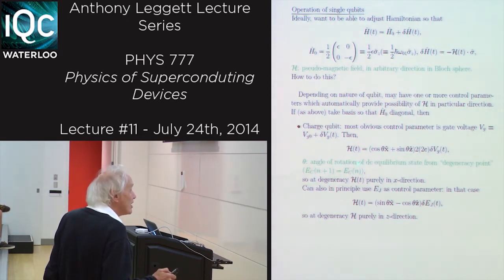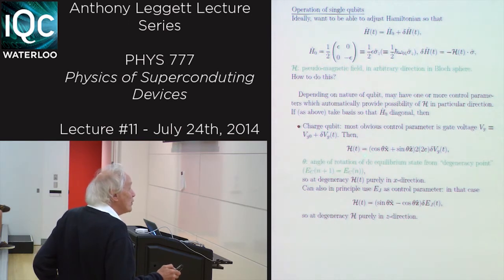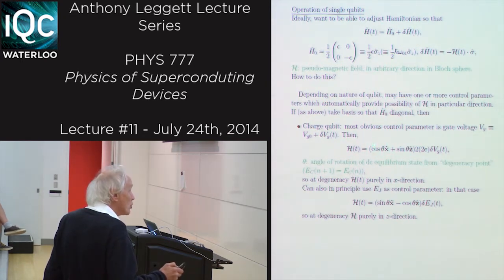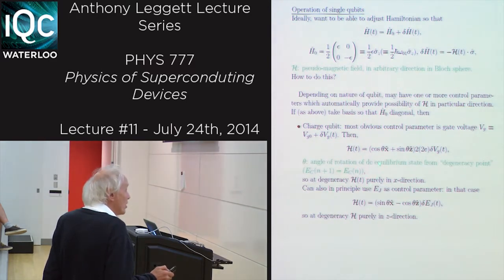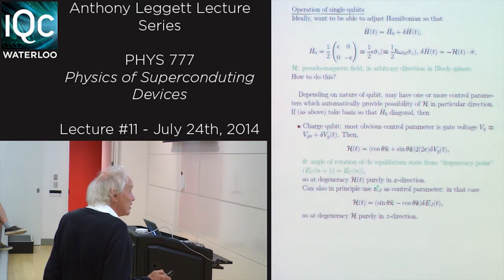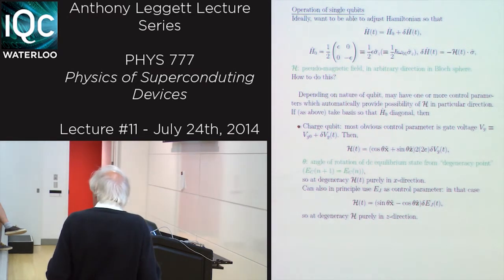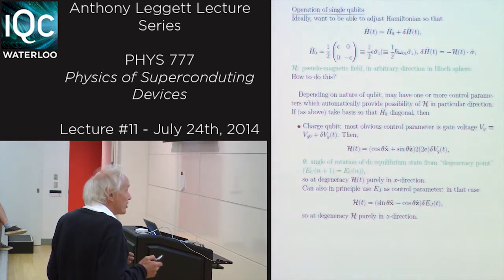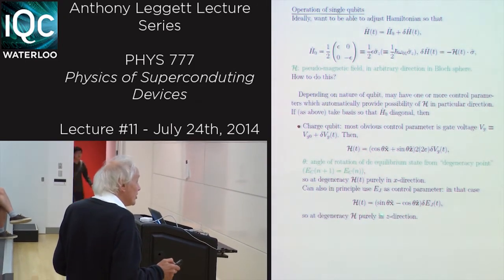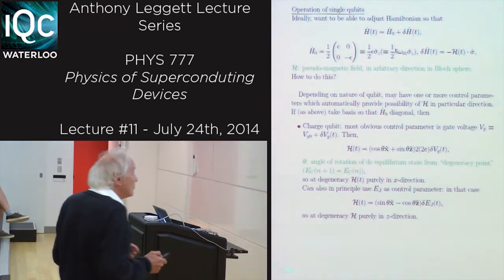You must remember that the gate voltage is not necessarily going to be diagonal in the basis in which the Hamiltonian is diagonal. If theta is the angle of rotation of the DC equilibrium state away from the degeneracy point, then the form of your fictitious magnetic field is proportional to a term along the x-axis proportional to cos theta and one along the z-axis proportional to sin theta. So at degeneracy, the natural h would be purely in the x-direction. You can also use E sub j, the strength of the Josephson coupling, as a control parameter, by making your Josephson junction in the form of a DC SQUID. At degeneracy in that case, h is purely in the z-direction.